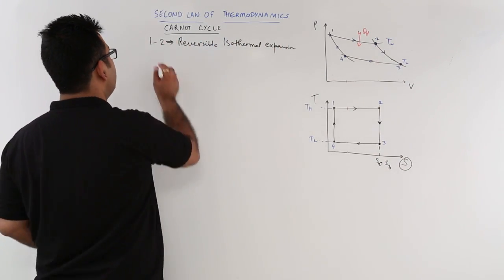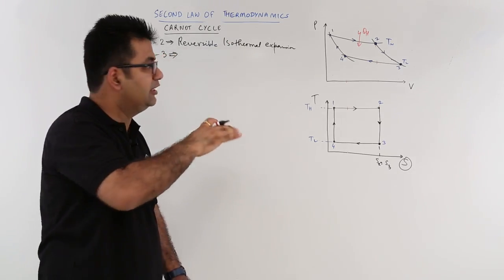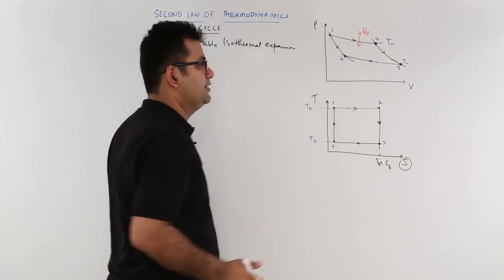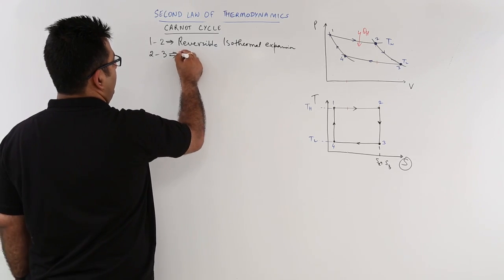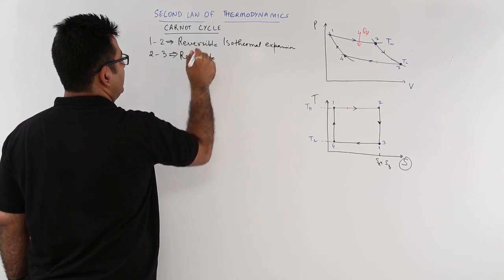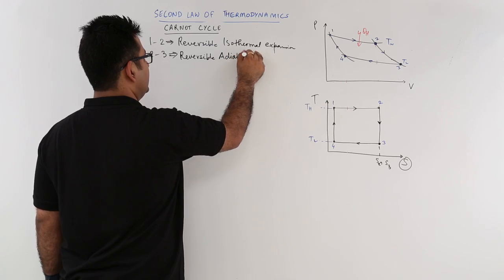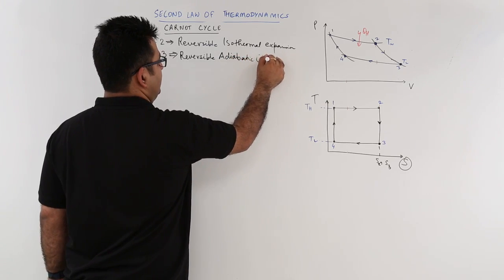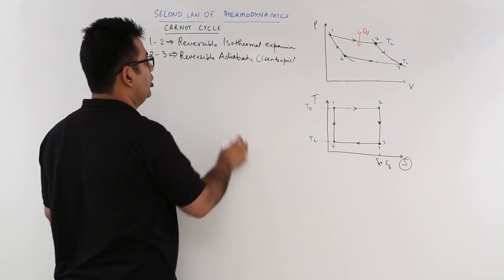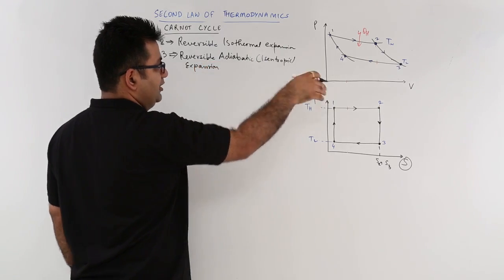Then we come to process 2-3. All the processes in this cycle are reversible. This means they can be retraced exactly to their initial state. So this is reversible, reversible adiabatic. Reversible adiabatic means it is an isentropic process. Same entropy. Reversible adiabatic or isentropic again it is expansion. You can see that.